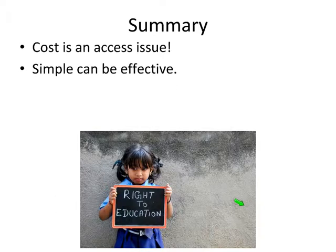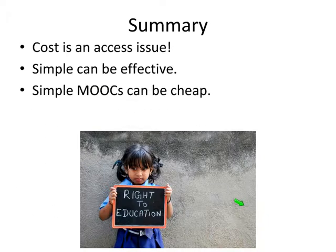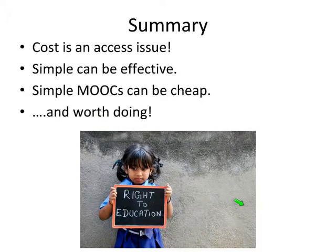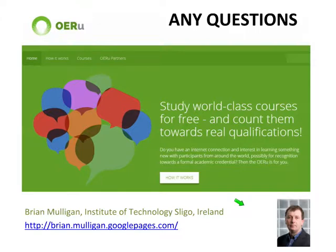To summarize: cost is an access issue. Simple courses can be quite effective, as Khan Academy has proved — there are huge numbers of people who say Khan Academy helped them get through their courses and examinations. Simple MOOCs can be relatively cheap to produce if we don't go for high production values, and they are worth doing — there are many benefits. And here's a plug for the OER Universitas, which we're a member of, working on developing open courses that can be used for MOOCs. If you have any questions, I'll stop the recording here.